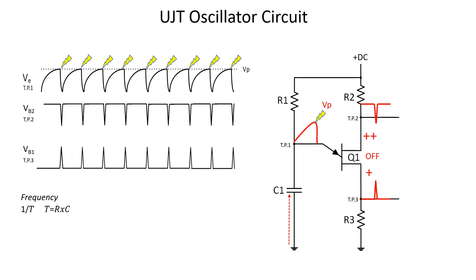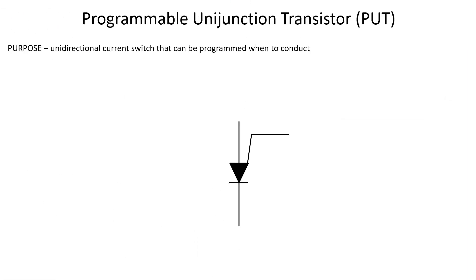The last component we're going to cover today is the programmable unijunction transistor, which is used as a current switch that can be programmed when to conduct. This component has three terminals: an anode, a cathode, and a gate. But this kind of thing looks like an SCR, right? Well, it's not. The key way to tell the difference is where the gate is connected. On this component, it's connected to the anode. Pro tip.